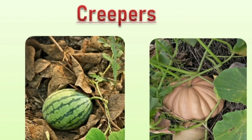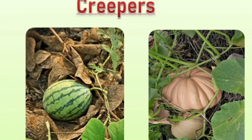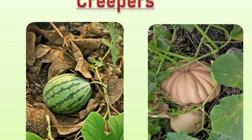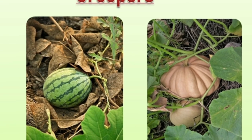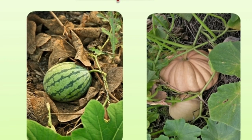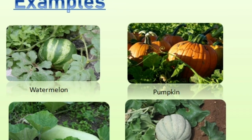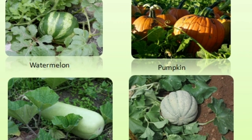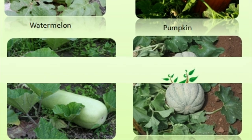Creepers have very weak, fragile stems that cannot climb even with a support. So they creep on the ground. Examples include Watermelon, Pumpkin, Ash gourd, Muskmelon, etc.